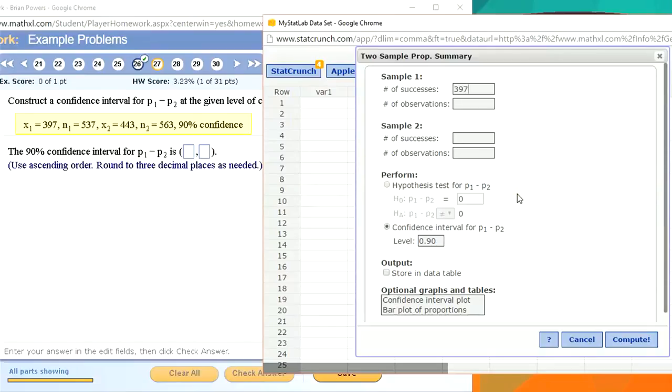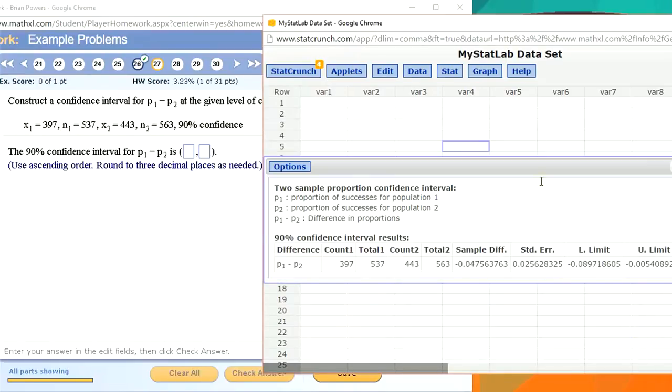And let's enter this data. So we are told 397 successes, 537, that's the first sample size, and then 443 and 563. That's everything we need to input. Just click compute.